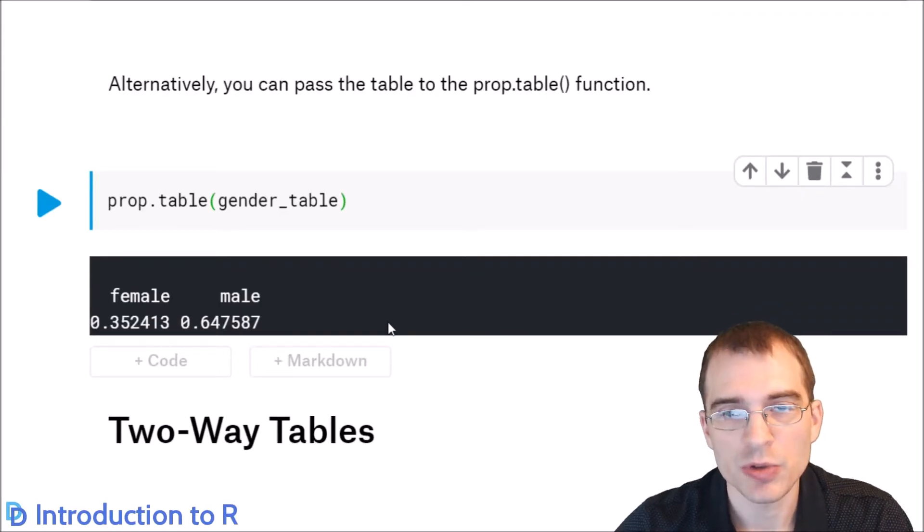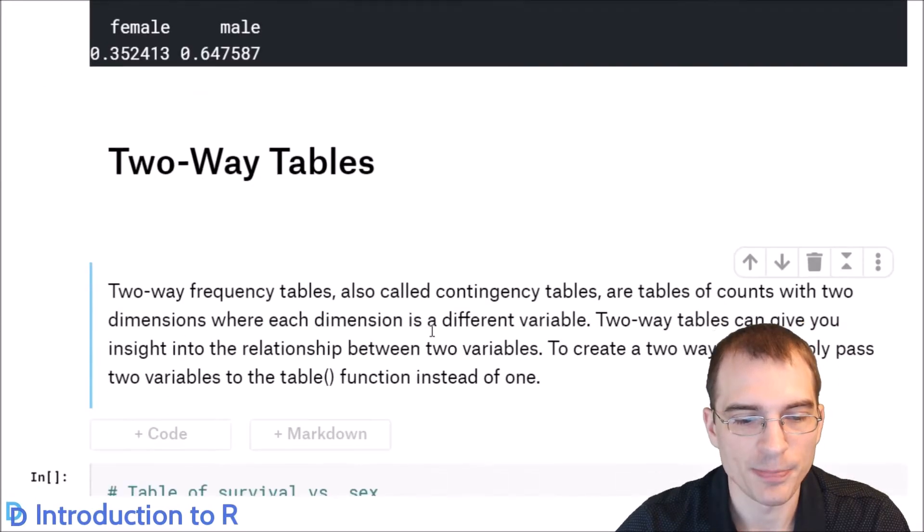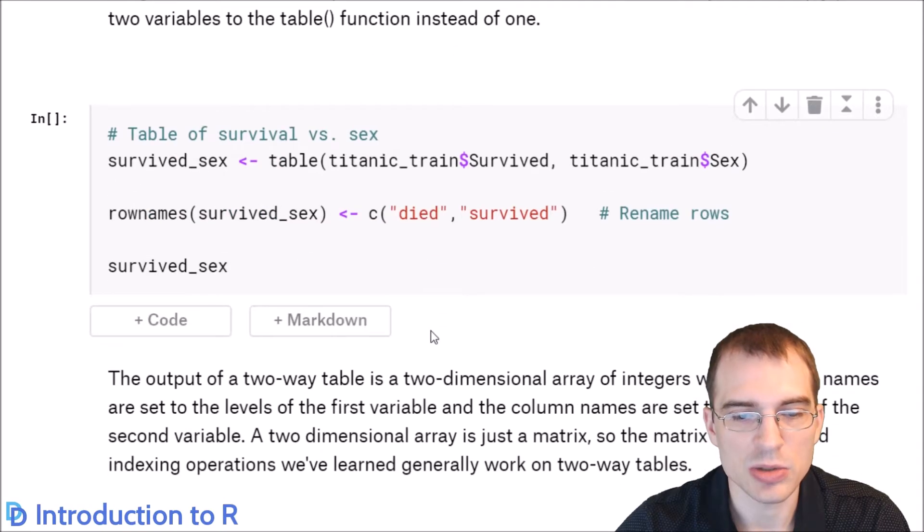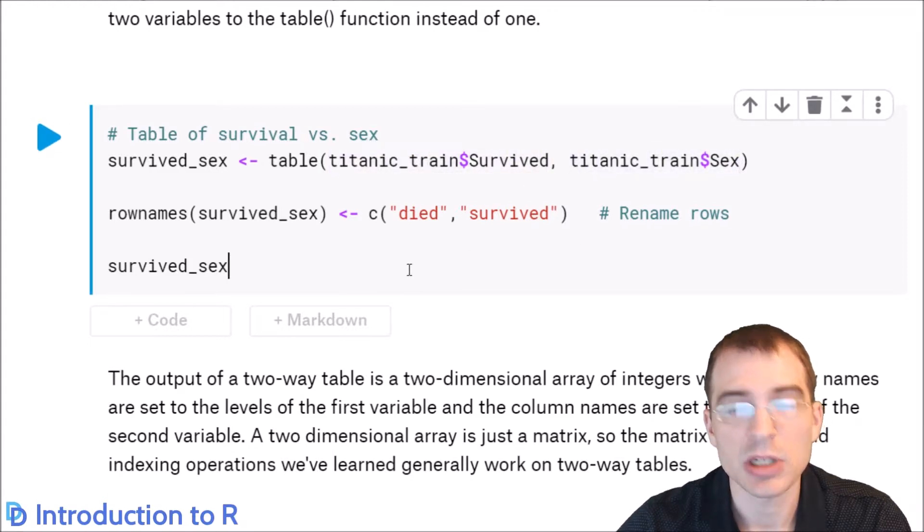Now, tables are useful for looking at single variables, but you can also create two-way tables by passing in multiple variables, and then you can get a sense of how different categorical variables might influence each other and the relationships between them. So next, we're going to show how to do some two-way tables. Again, you just use the table function, and instead of passing in one variable, you just pass in two.